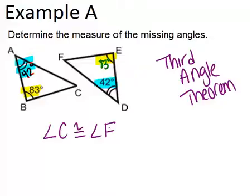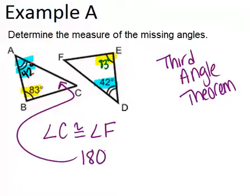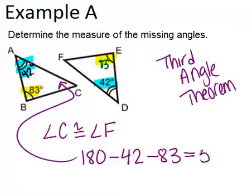To find angle C, remember that in a triangle the three angles add to 180 degrees. So we can do 180 minus 42 minus 83 and get our answer, which is 55. So angle C is 55 degrees, and angle F will also be 55 degrees due to the third angle theorem.